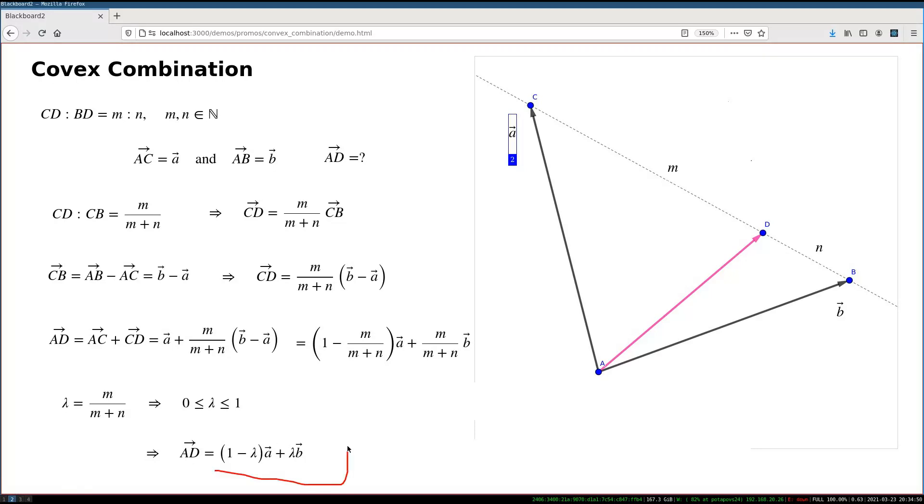Such an expression, the one which we see here on the right-hand side, it's called the convex combination of two vectors A and B with a coefficient lambda.